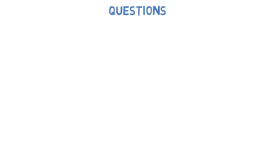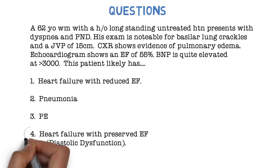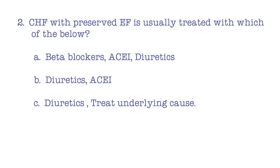Question one: A 62-year-old white male with long-standing untreated hypertension presents with dyspnea and PND. Exam shows basilar lung crackles and JVP of 15 cm. Chest X-ray shows pulmonary edema. Echocardiogram shows ejection fraction of 55%. BNP is elevated at greater than 3000. This patient likely has: heart failure with reduced ejection fraction, pneumonia, pulmonary embolism, or heart failure with preserved ejection fraction? The answer is number four — diastolic dysfunction.